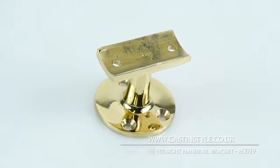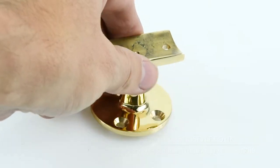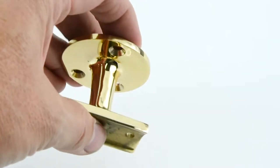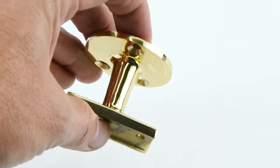This is the H3019 Croft Straight Handrail Bracket. Croft makes some beautiful high-quality architectural pieces and these little brackets are ideal for stair rails where you need to attach your banister to.